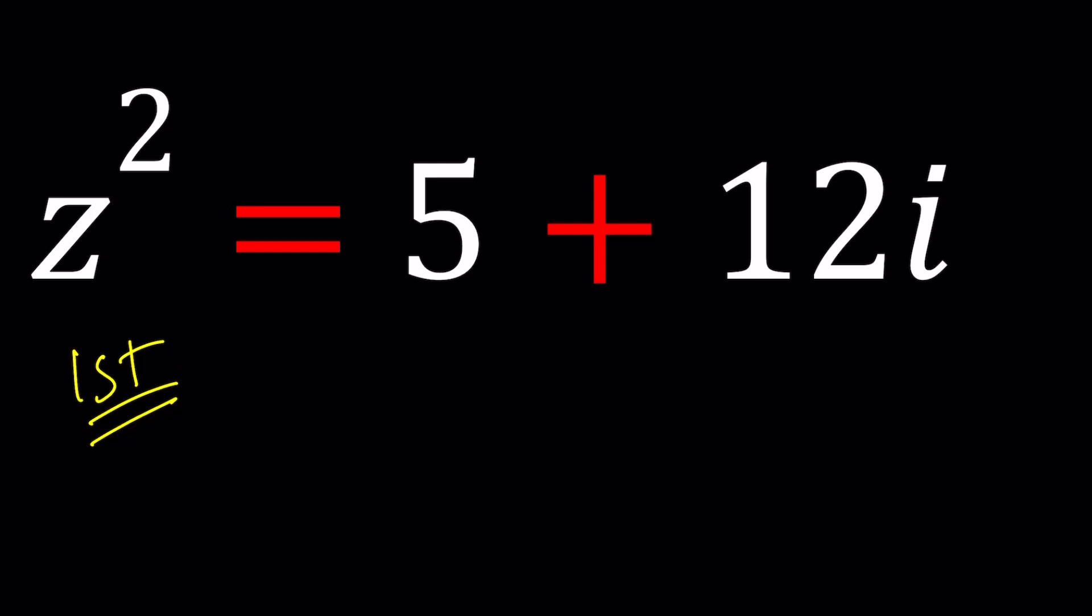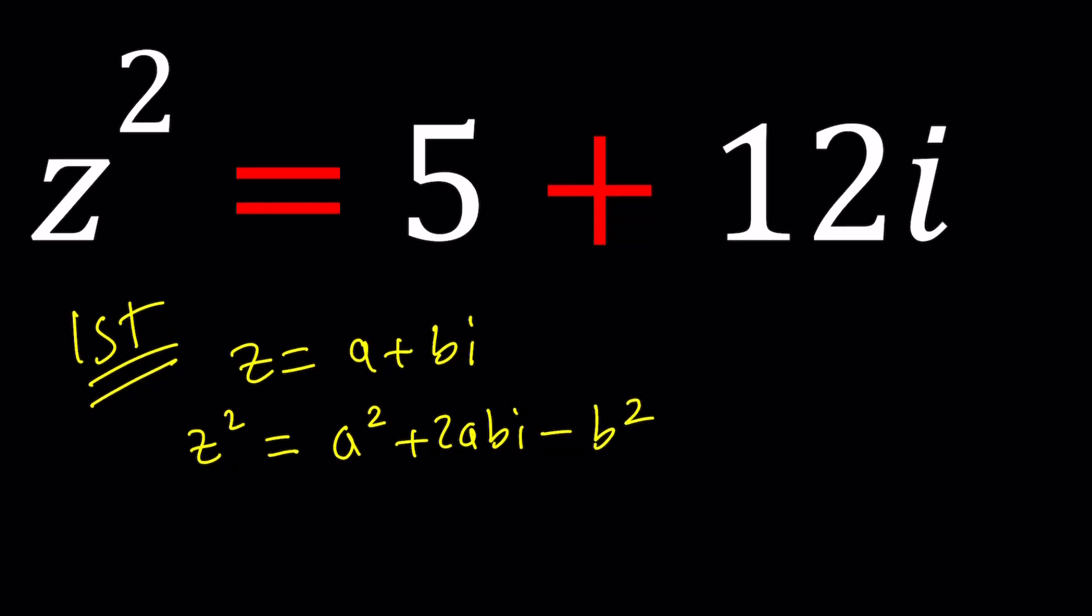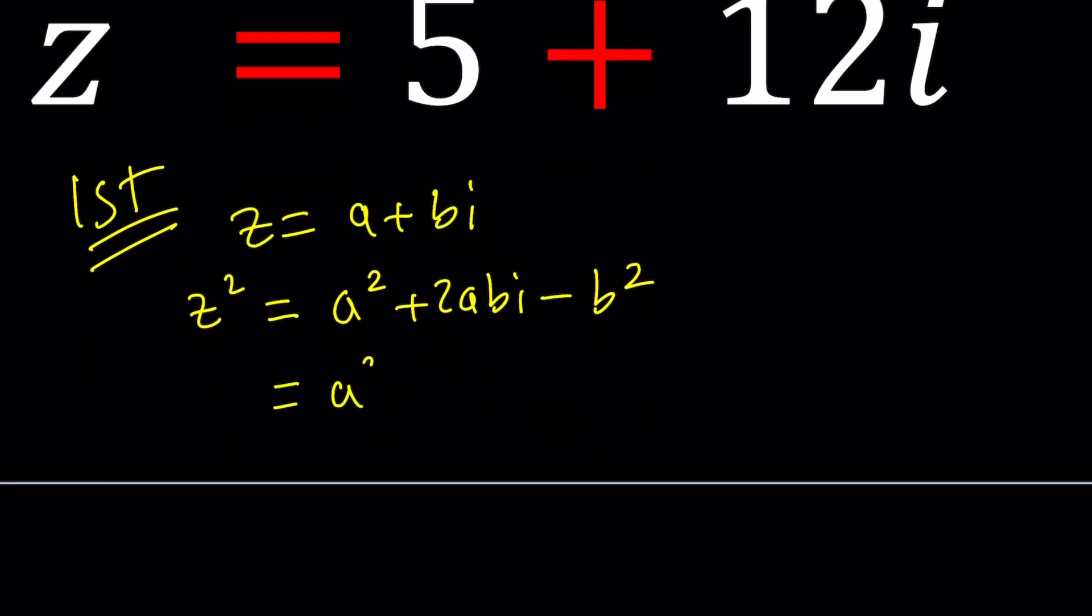First method, suppose z can be written as a plus bi, and then z squared is going to be a squared plus 2abi plus b squared i squared. i squared is negative 1, so I can write it as minus b squared. Now this can be rearranged as a squared minus b squared plus 2abi, putting the real parts together, and setting this equal to 5 plus 12i.